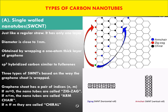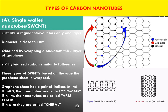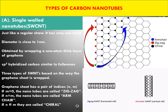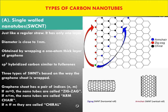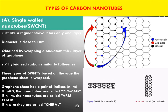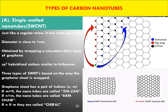Single-wall carbon nanotubes have only one layer made of carbon and the diameter is close to one nanometer — that's why it is called a carbon nanotube. It is generally obtained by wrapping a one-atom-thick layer of graphene. The carbon here is sp2 hybridized, similar to fullerenes, making them good conductors.